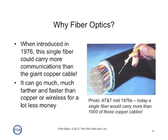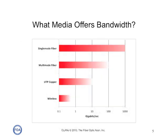This photo, taken by AT&T 40 years ago, shows how a single fiber would carry more communication than a thousand of those cables would 40 years ago. The whole economics of fiber is determined by the fact that it has higher bandwidth and higher distance capacity — it can go further and faster for a lot less money.